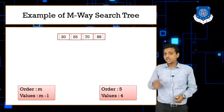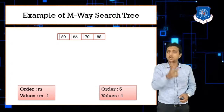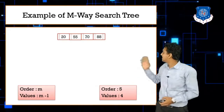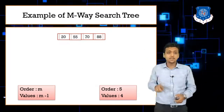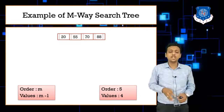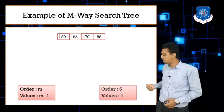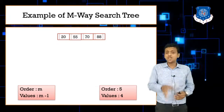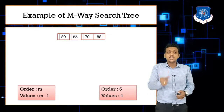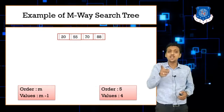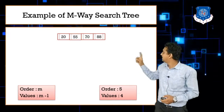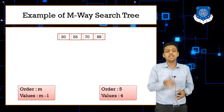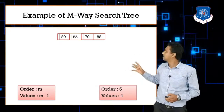Let's take an example of an M-way search tree node. For order five, maximum four values can be inserted. In a regular binary tree node you see one value and two pointers, but here the node contains four values — 20, 55, 70, and 80 — and five pointers. All values are stored in ascending order.